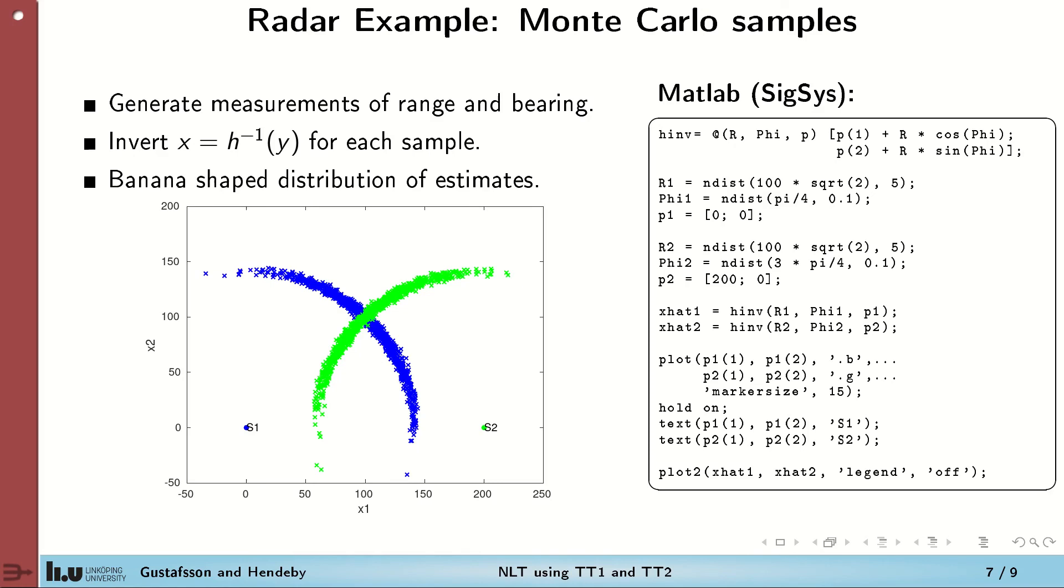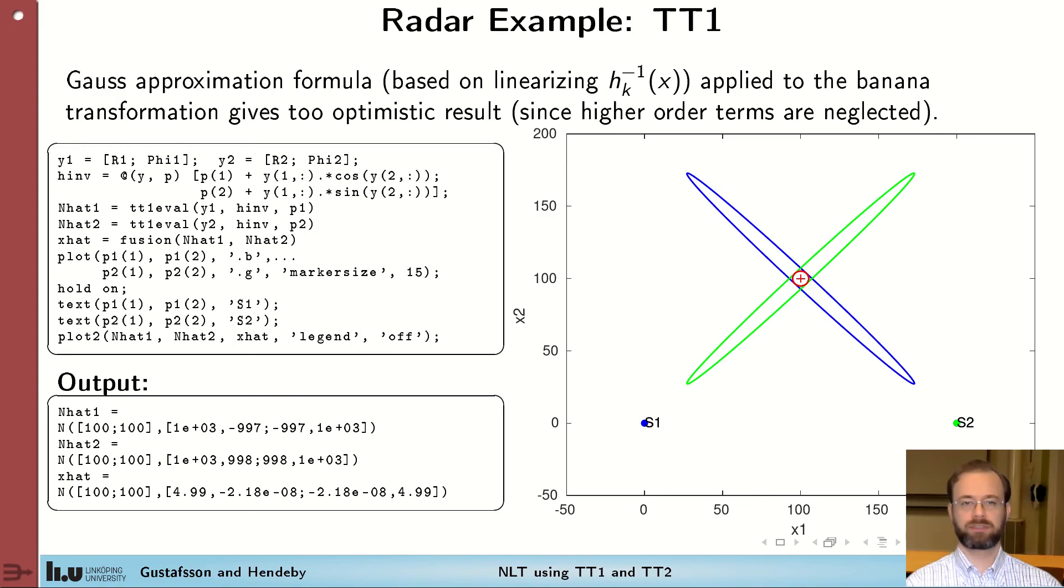Let's now approximate the two distributions using TT1. The results are given here to the right. Again, the blue is the covariance ellipsoid for the left sensor and the green the right sensor. We notice that these ellipsoids are fairly thin, which indicates that by approximating and dropping higher order terms, we have underestimated the uncertainty in the measurements.